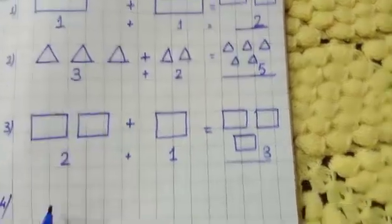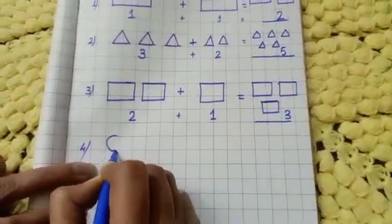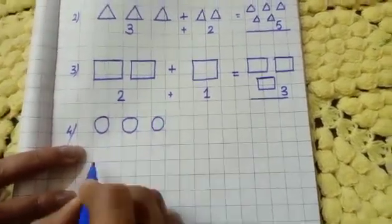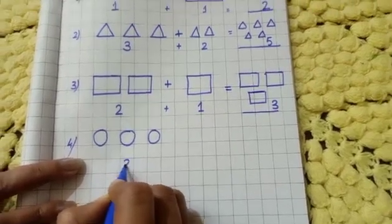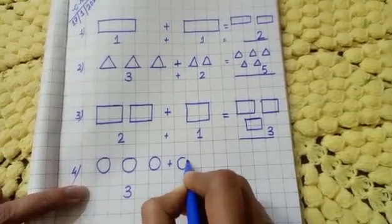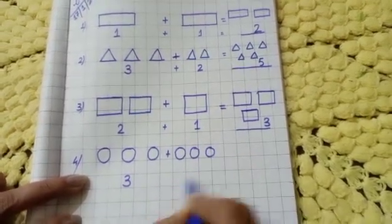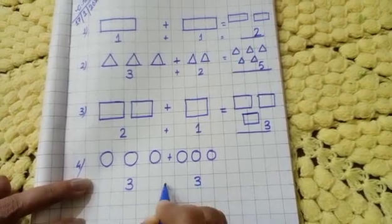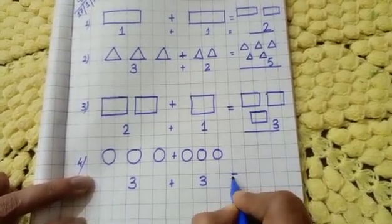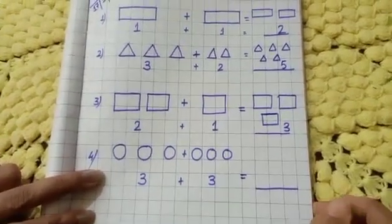Now number four — I am drawing circles. This is one circle, two, three. So here I am writing three, plus here again one, two, three. I am writing three. So three plus three — how much? Students, can you say? Do it by yourself.